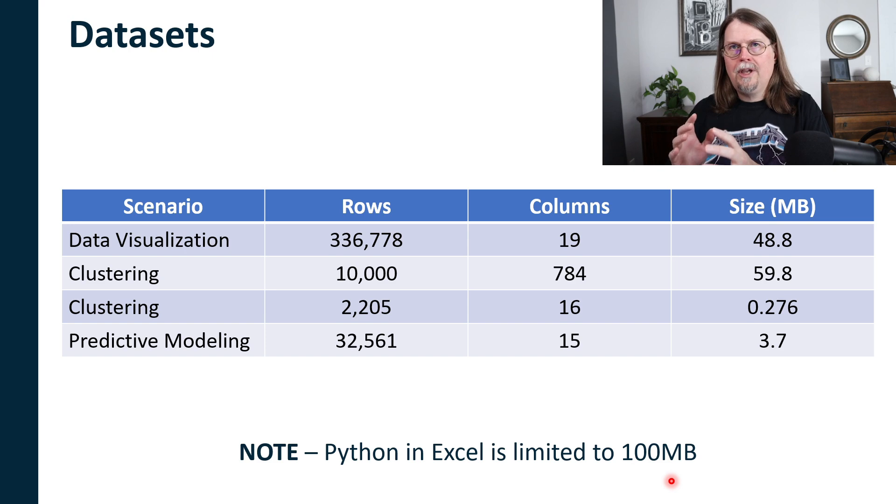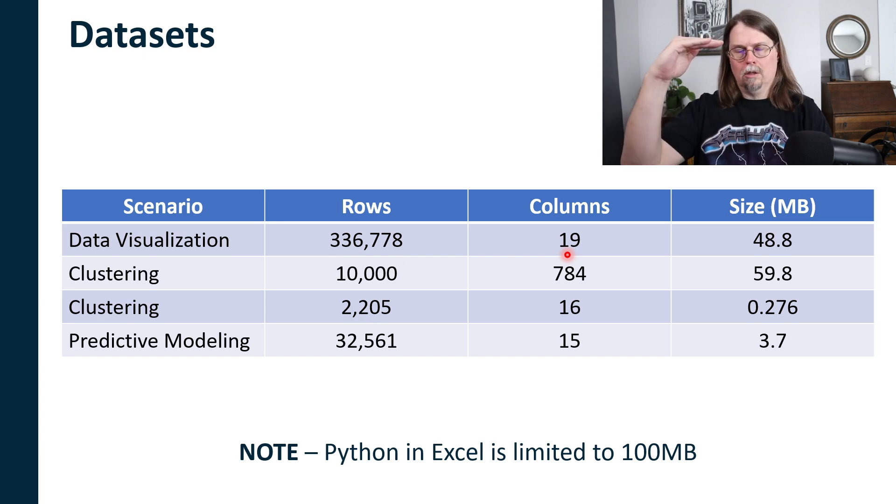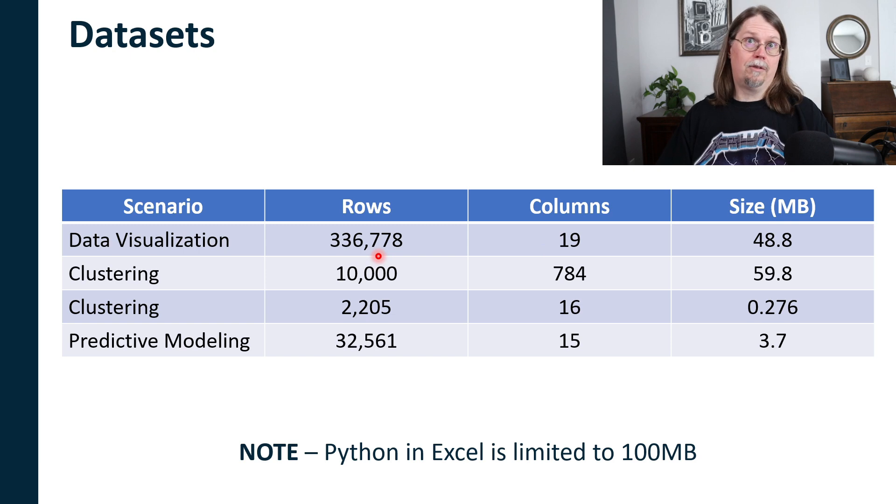Let's take a look at the data sets. So we're looking for a sweet spot of data sets that we can use that simulate real world kinds of Excel data science use cases. And what we can see here is, for example, the data visualization scenario, I'm using a data set that has 336,000 rows. So this was actually loaded into a table in a worksheet in Excel, and it has 19 columns. And that's pretty standard for the kinds of things that I see. This is a good example of narrow, not a lot of columns, but very, very long data sets. I see this quite a bit in the real world.